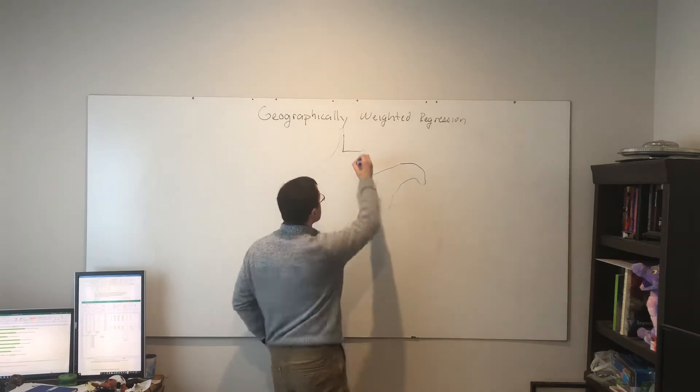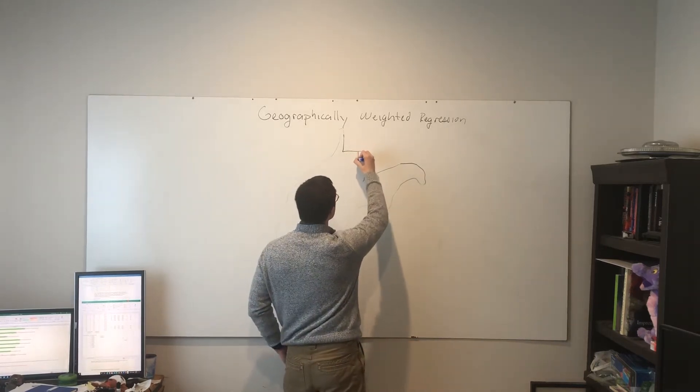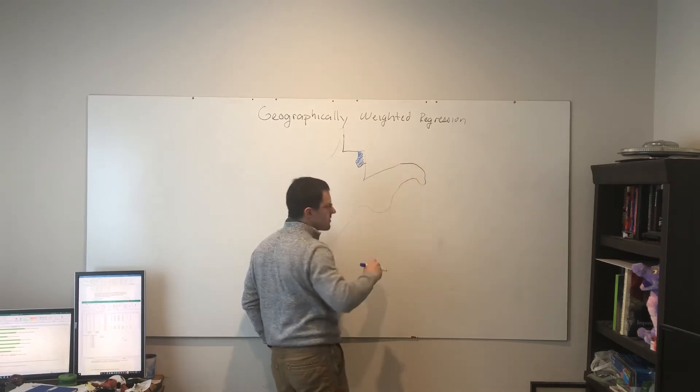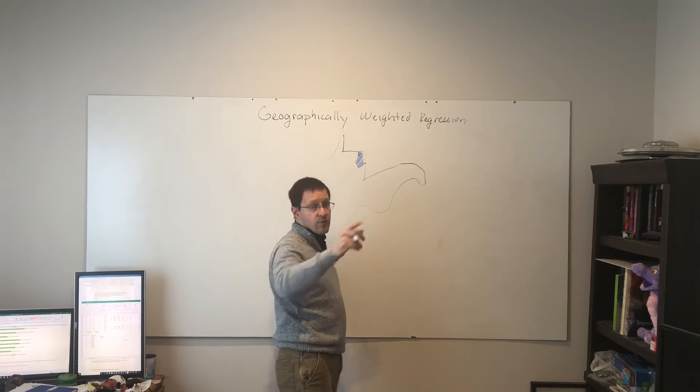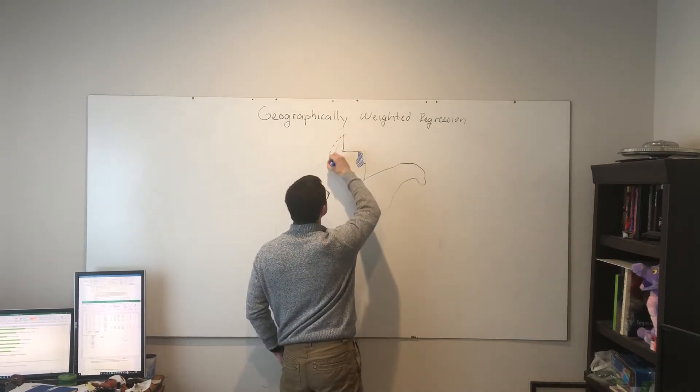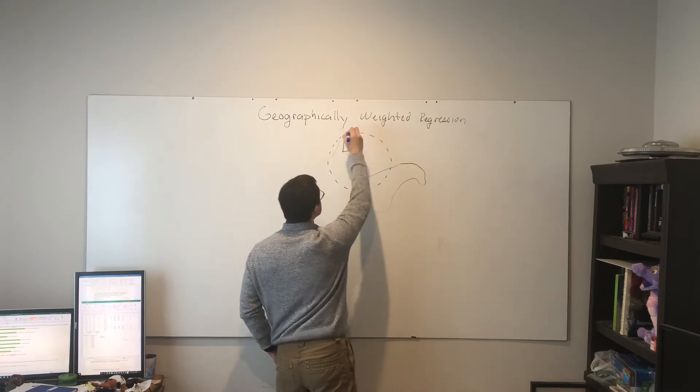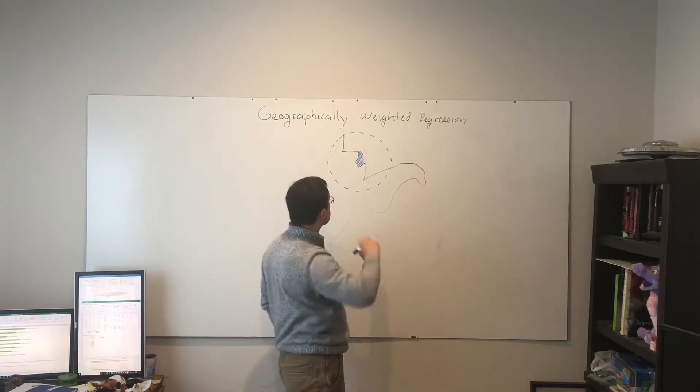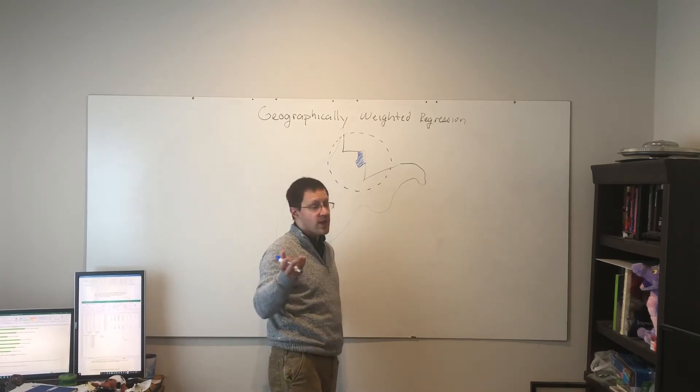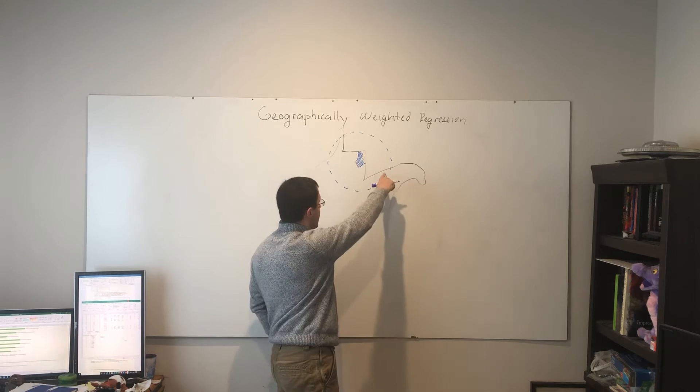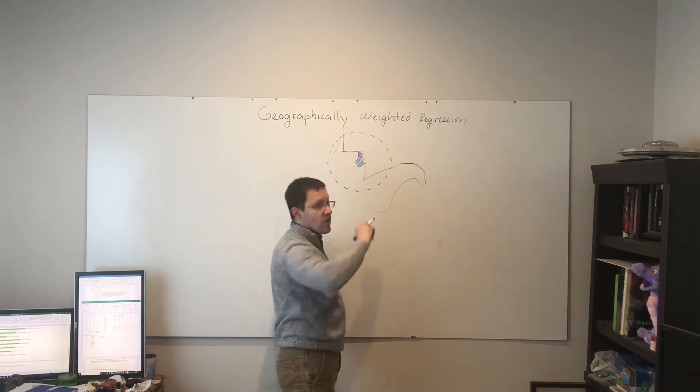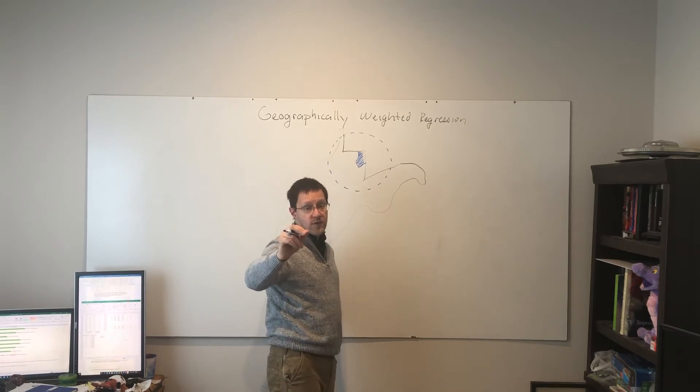But we may have, then, our value for Preston County. If it was, say, a 70-kilometer radius distance threshold for defining a neighborhood, that's saying any county inside this circle, only those counties contributed to that regression.